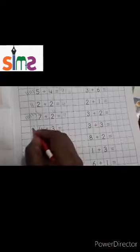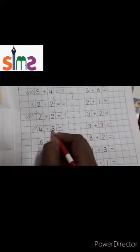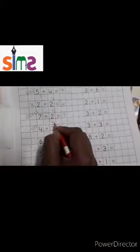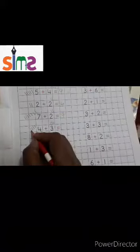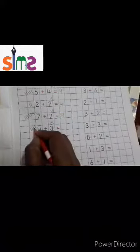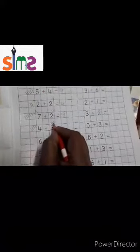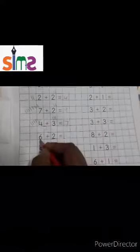Next number is four: one, two, three, four. Three: one, two, three. Count all the lines: one, two, three, four, five, six, seven. Four plus three is equal to seven.